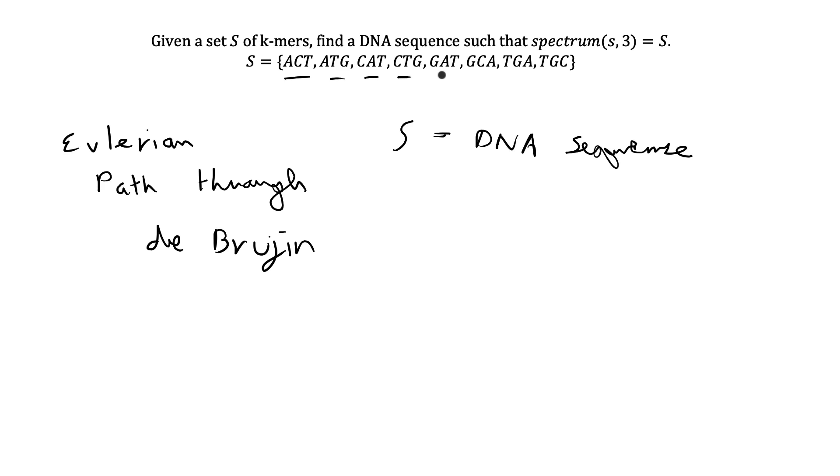So for each DNA fragment, each three character substring that we have, we're going to create a graph of overlapping sequences and the overlap is going to be found by taking K minus 1. So in this case, each fragment is three letters long. So each vertex is going to be K minus 1, which would be two characters long.